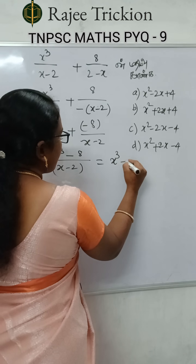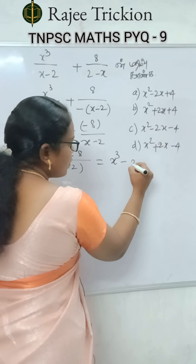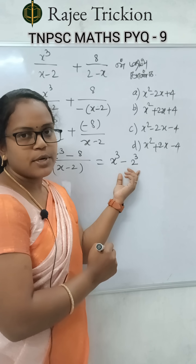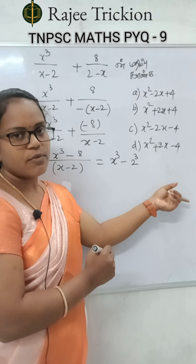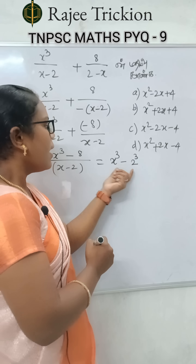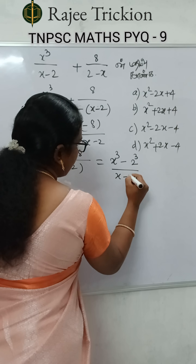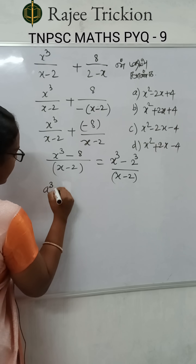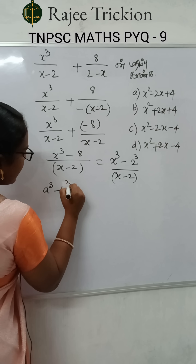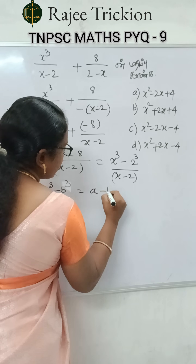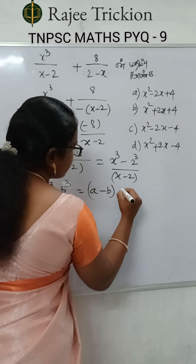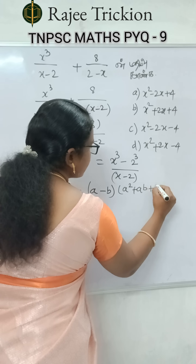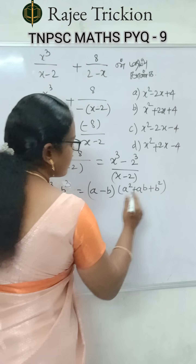So x³ minus 8 — note that 8 equals 2³. We apply the a³ minus b³ formula, which is: a minus b, times a² plus ab plus b².